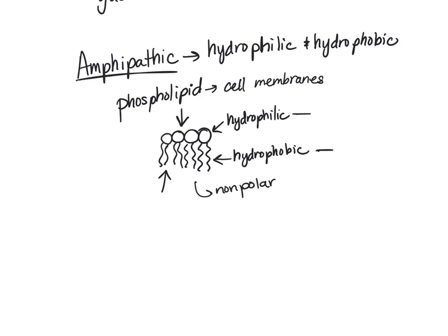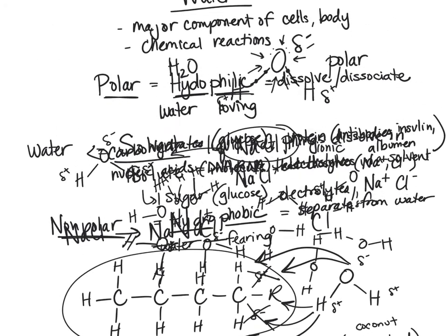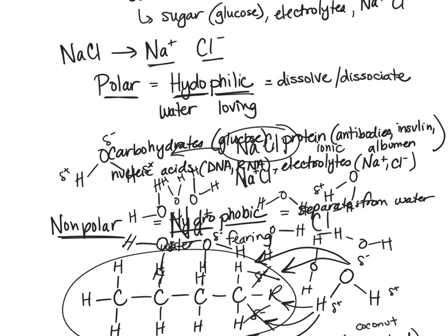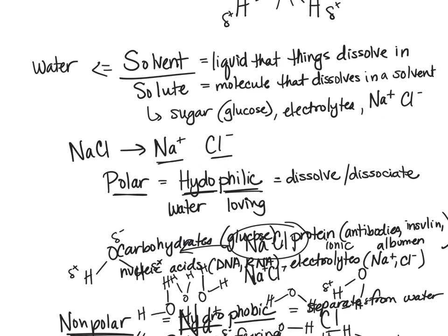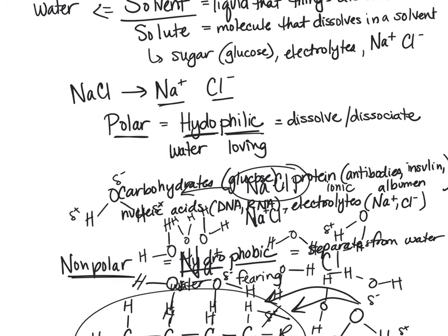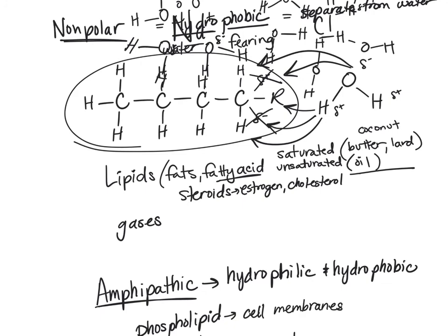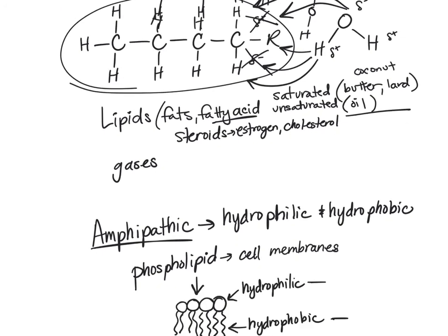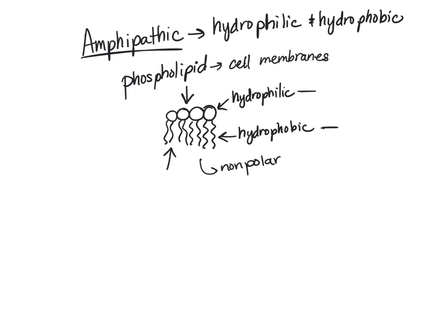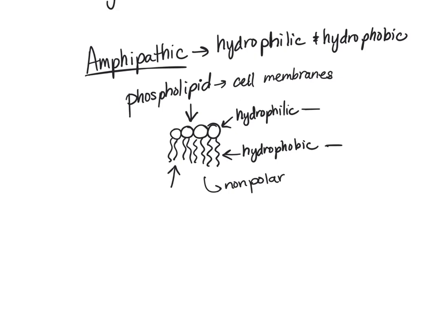In summary: water makes a great solvent. We talked about solvent versus solute, then about polarity and why it makes water a good solvent. Things that are hydrophilic are water-loving and will dissociate or dissolve in water. Things that are non-polar or hydrophobic will not dissolve in water. And then we have amphipathic molecules, which have regions that are hydrophilic and regions that are hydrophobic.